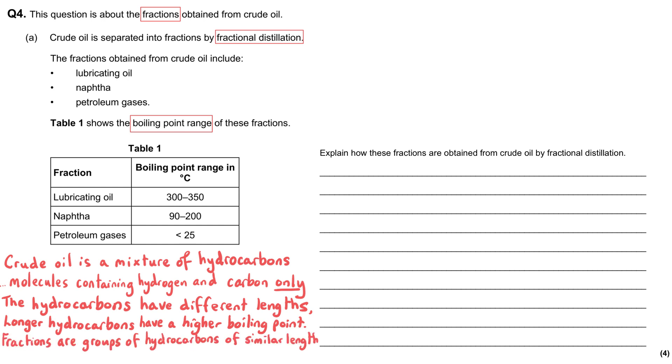The very long hydrocarbons have got a higher boiling point than the shorter hydrocarbons. And when we separate them out using fractional distillation, we don't separate them out entirely, we separate them out into groups of similar length hydrocarbons which are referred to as fractions.